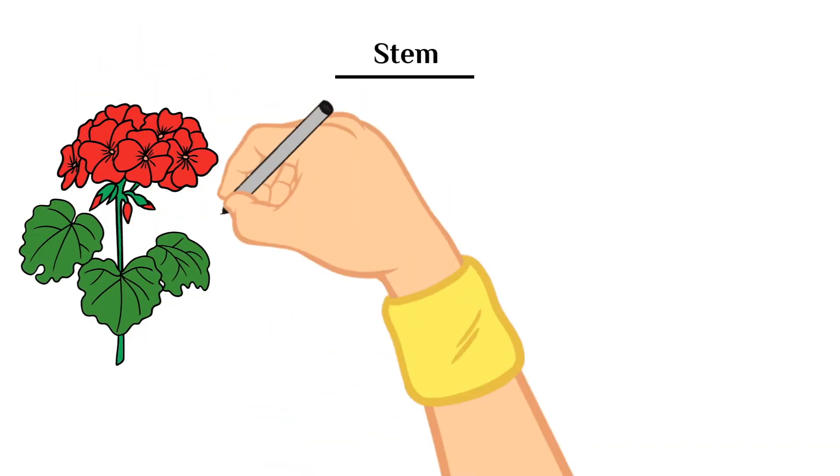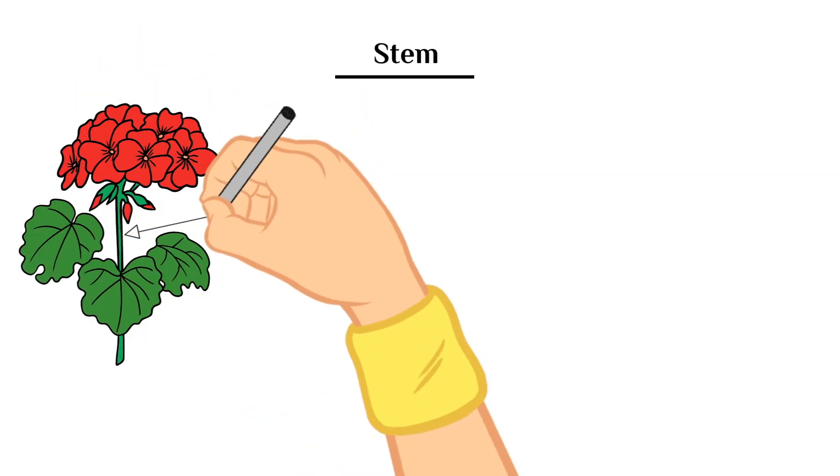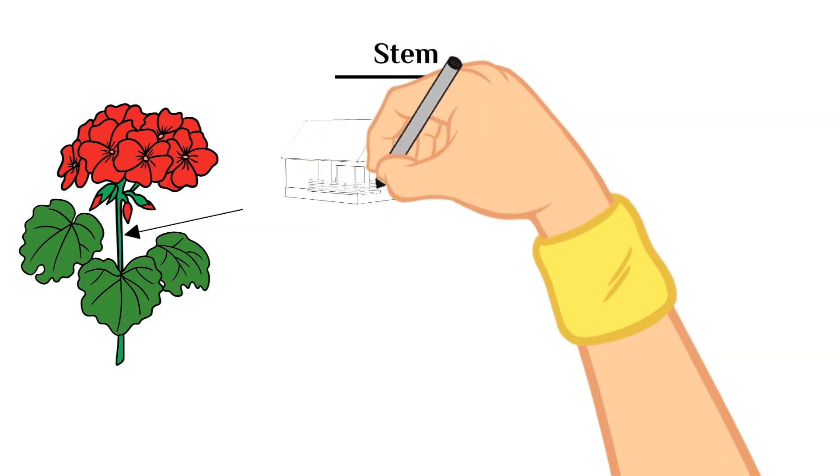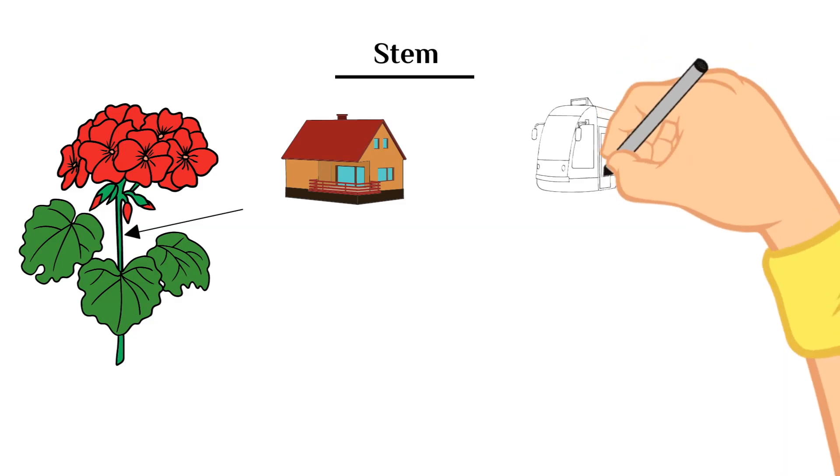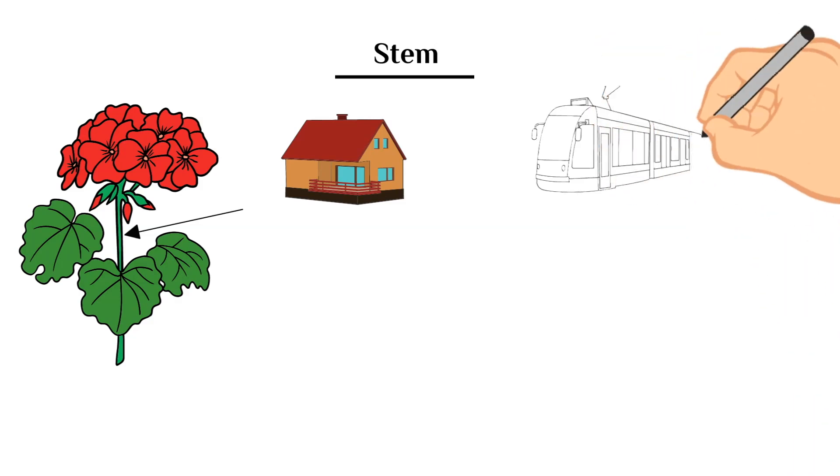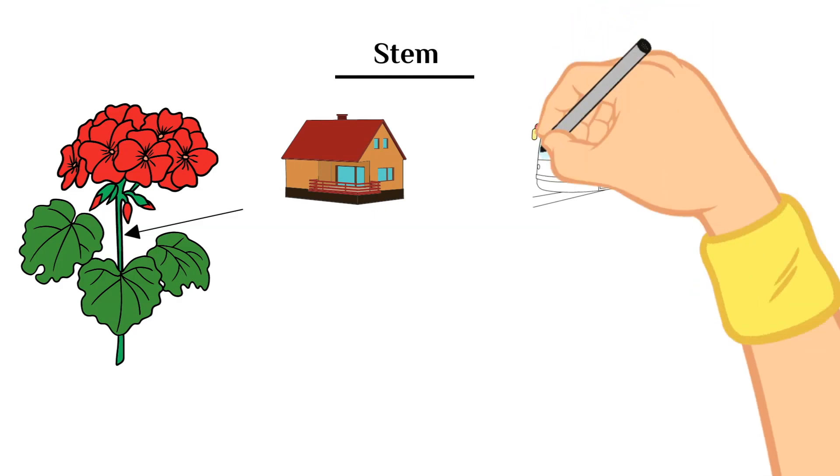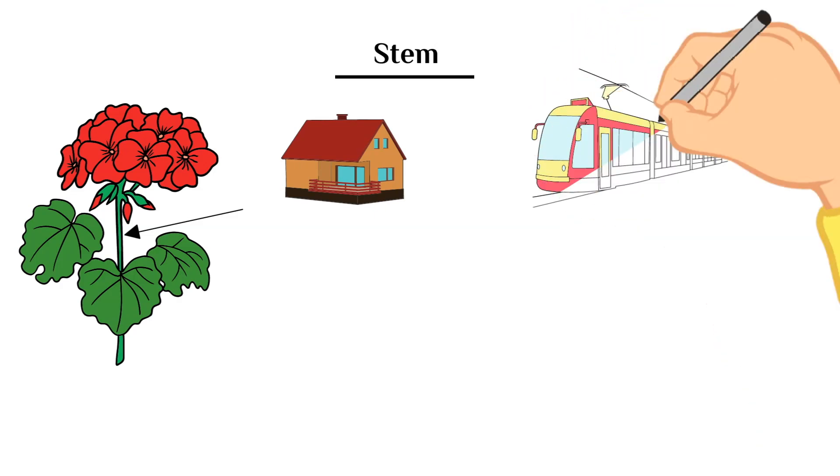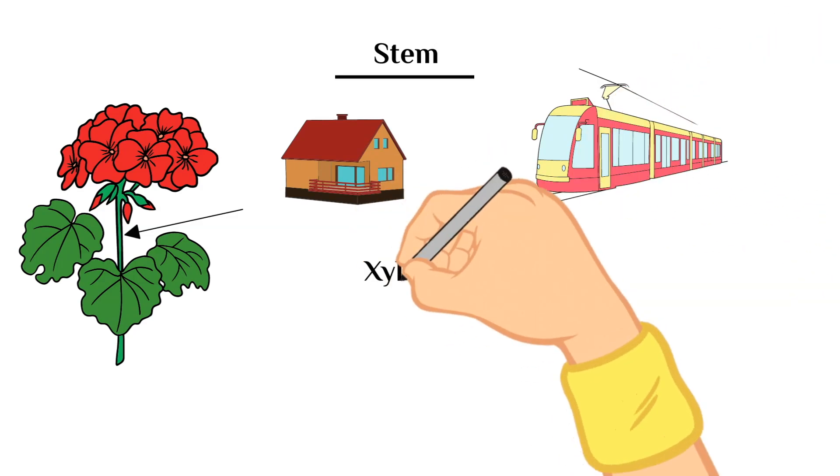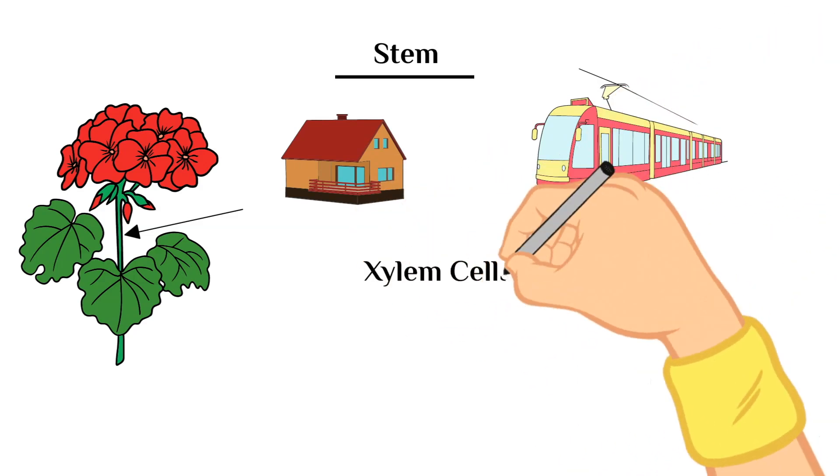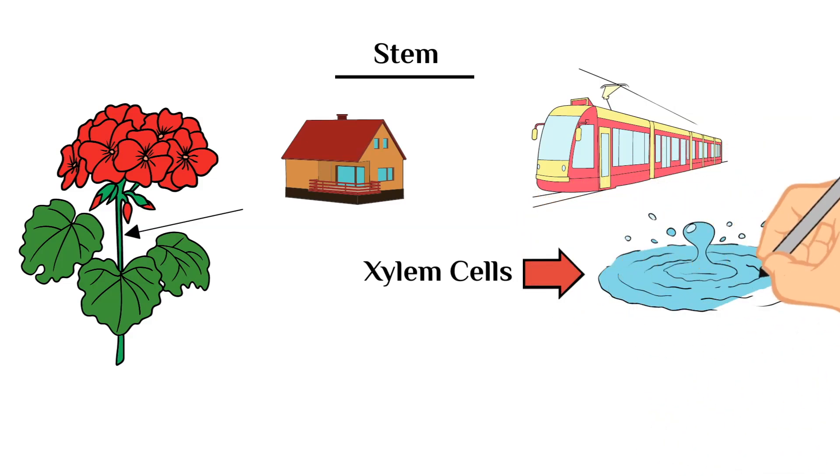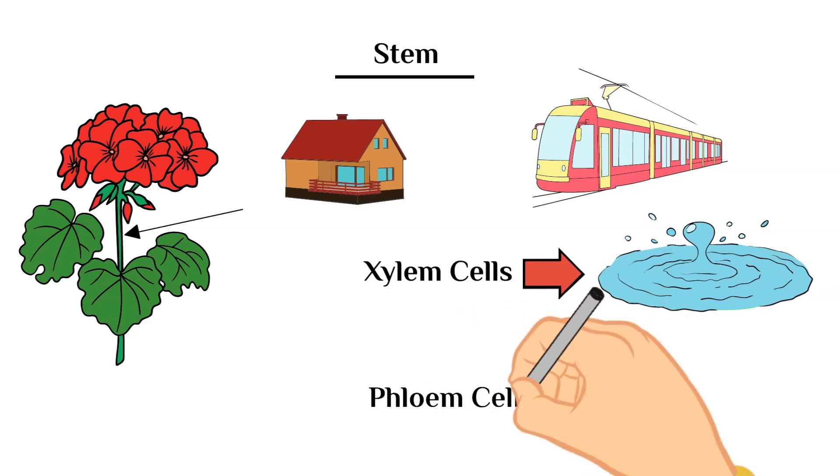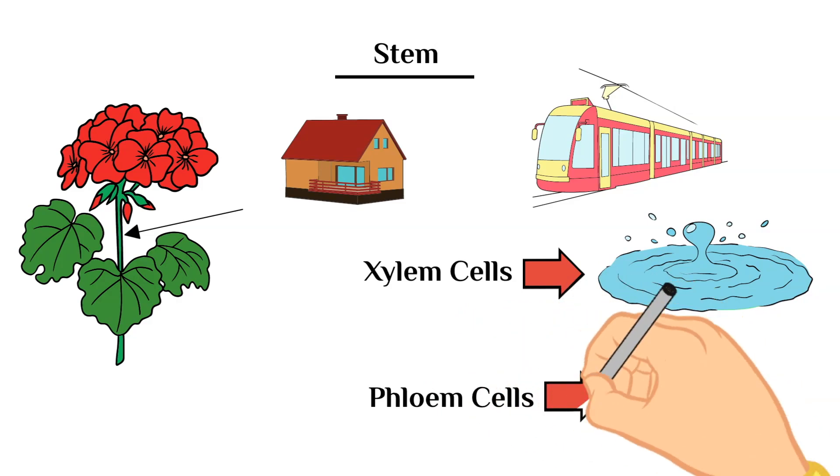Now stems serve many different purposes for the plant, just like leaves do. One of them being to help support the plant structure and hold it upright. They are also part of a very important transport system within the plant that carries nutrients, sugar, and water from the soil to the rest of the plant. Specifically, xylem cells in a stem are the ones that carry water, whereas the phloem cells in the stem carry food.